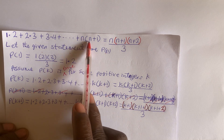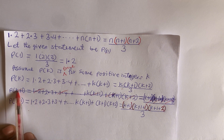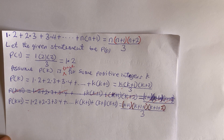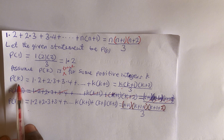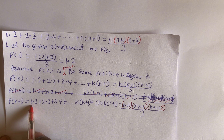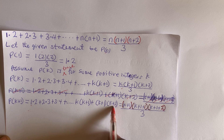Now if we assume P(k) is true, then we are going to prove that P(k+1) is also true. So we need to show that 1×2 + 2×3 + ... + (k+1)×(k+1+1) equals the corresponding expression with n replaced by k+1.